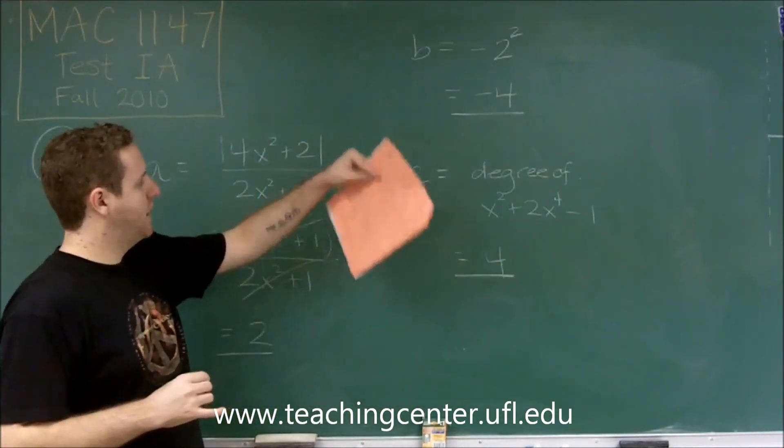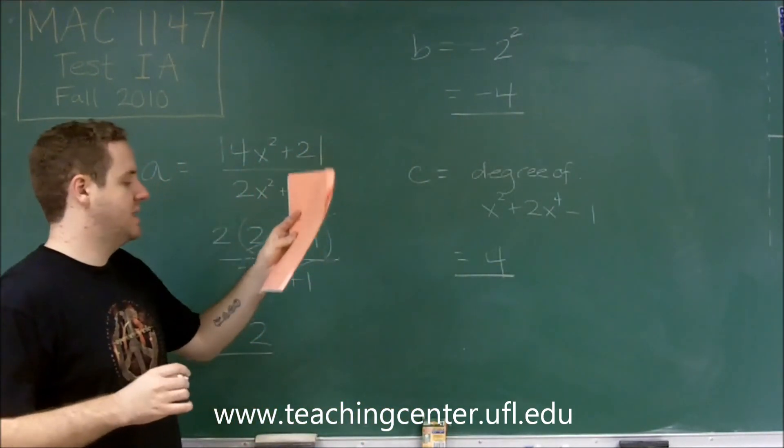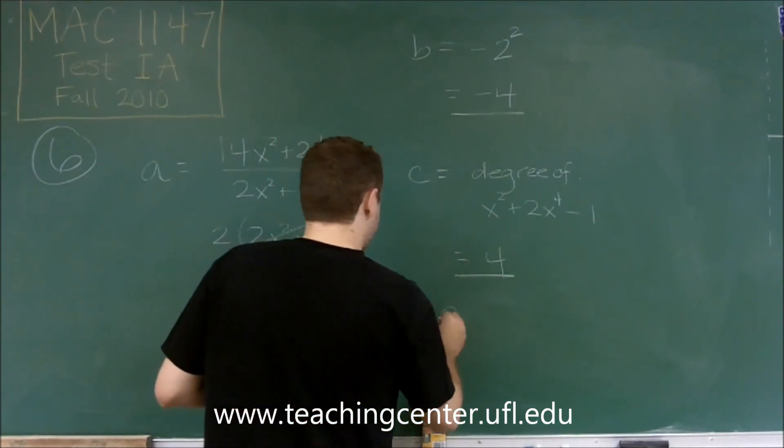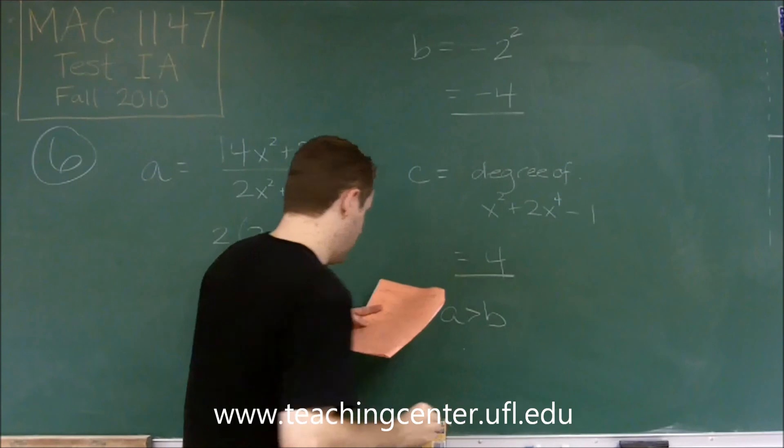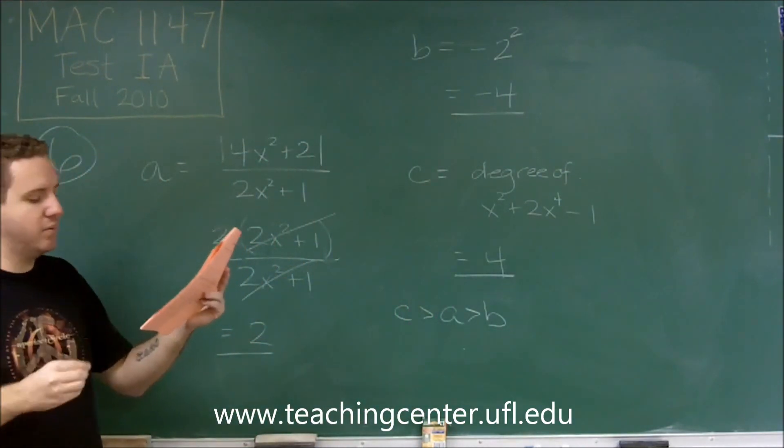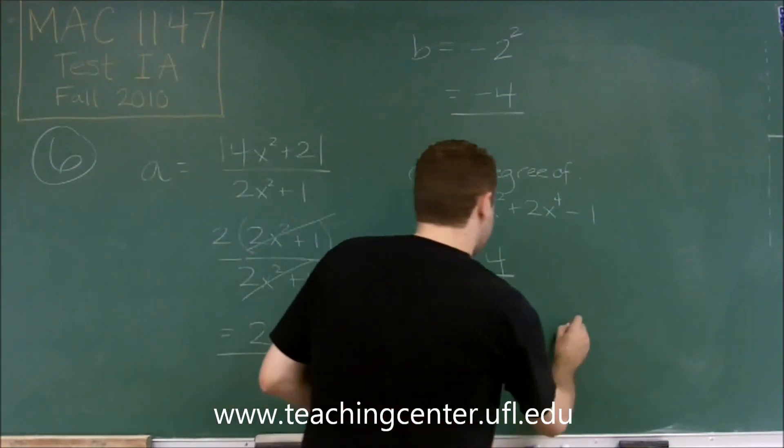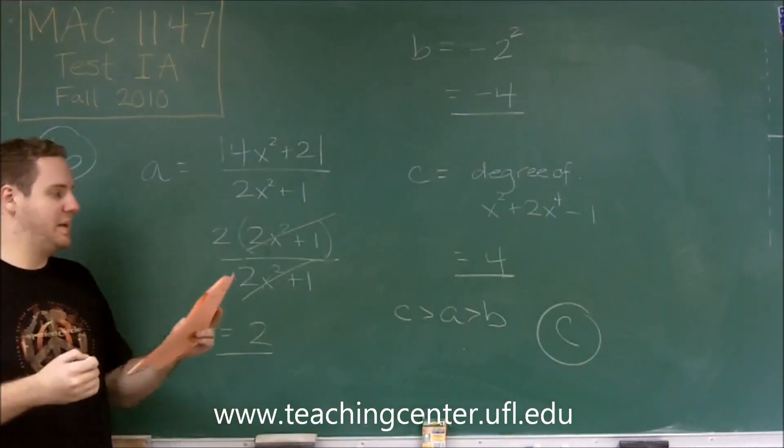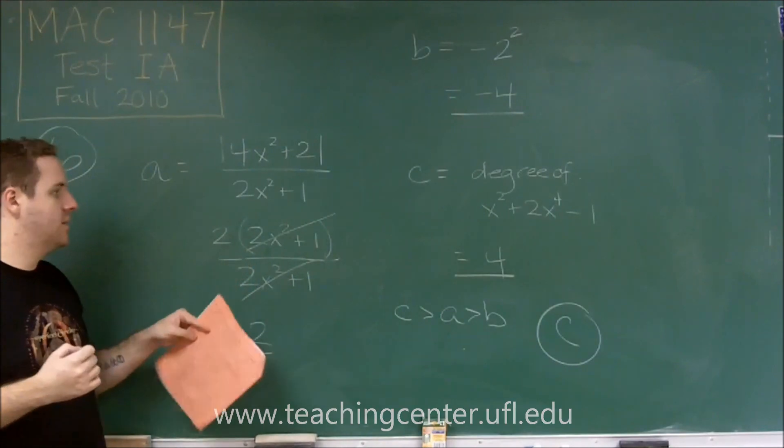So we have 2, negative 4, and 4. So the correct answer here should be C is greater than A, which is greater than B. Which is written backwards is answer choice C in this case. They have B is less than A, which is less than C.